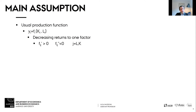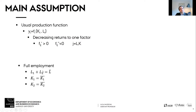The production function exhibits decreasing returns to one factor, and this will play an important role in this lecture. Rather than looking at unit cost, we're going to work directly with the production function. We also have three full employment conditions: workers in industry one plus workers in industry two equals total workers, and the two specific capital stocks are fully used in their respective industries.